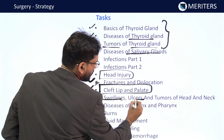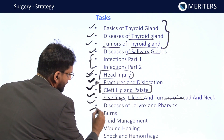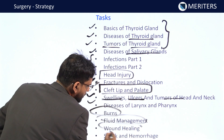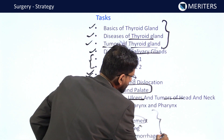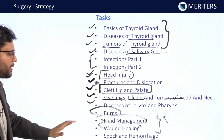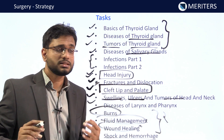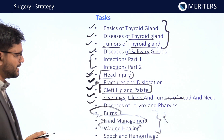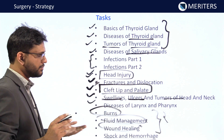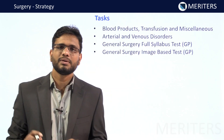Other important surgical topics include swellings, ulcers, and tumors of head and neck, diseases of larynx and pharynx, burns and fluid management, and wound healing as well as shock and hemorrhage. At least two questions are going to come from any of these topics. Burns alone is a huge and interesting topic — at least one question on management or fluid management. Wound healing, keloids, shock, and hemorrhages together guarantee one to two questions.